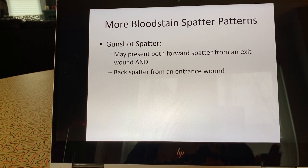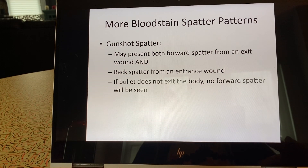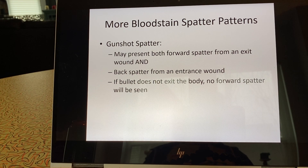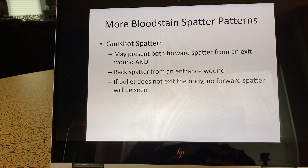Forward spatter is what is projected away from the source of blood. This is an important point that relates to one of the questions in your homework assignment: if the bullet does not exit the body, you're potentially not going to see any forward spatter from an exit wound. If it's a through-and-through bullet wound, then you're going to have spatter projected on the wall or whatever was behind that person.